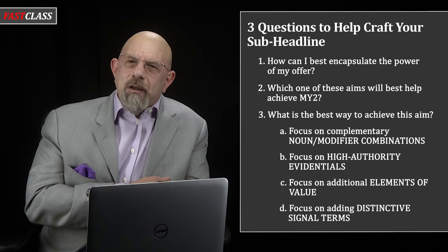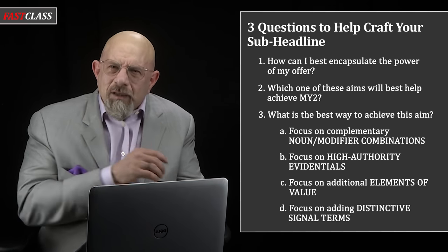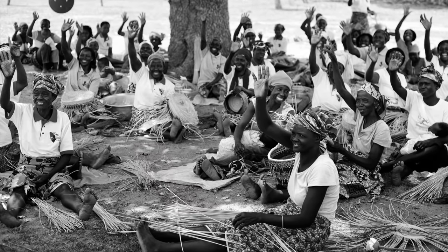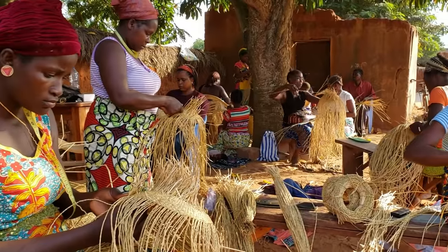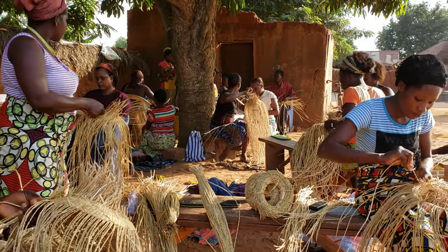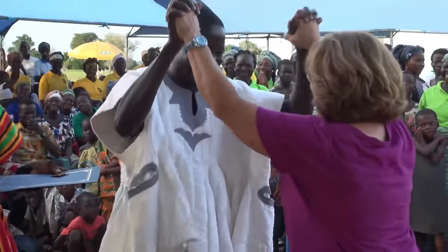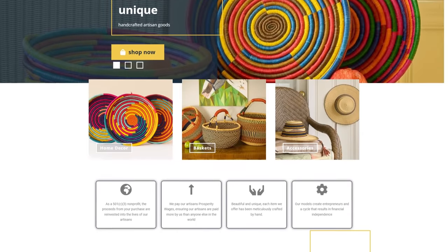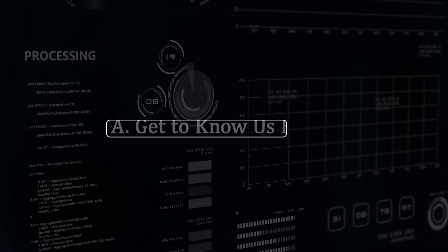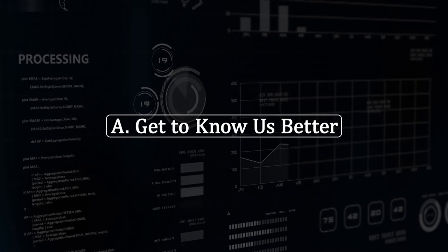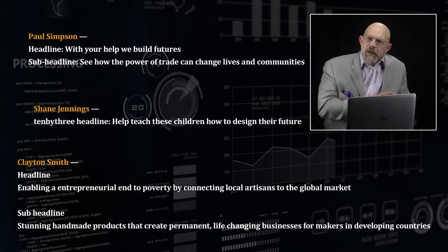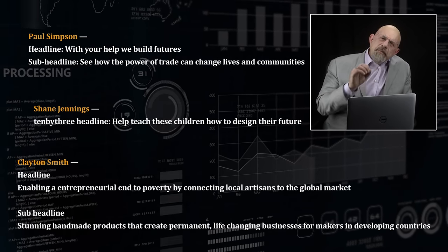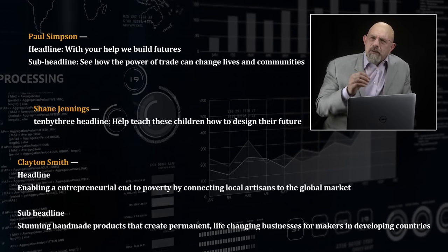Do not worry if you're still unclear — I've hit you with a lot fast. But we're going to learn how it looks in practical application right now. Let me introduce you to 10x3. They are a powerful not-for-profit that has rescued 8,000 families from poverty. Their CEO and founder is a personal friend; I trust her. They're doing amazing work around the world. Let's help them and learn as we help them. The current headline says 'get to know us better,' which we discussed in session 14. Let's combine our thinking and suggest the best headline for the purposes of an experiment.